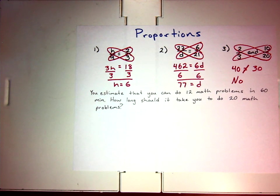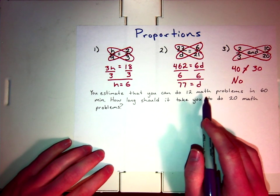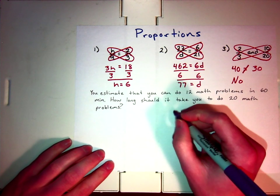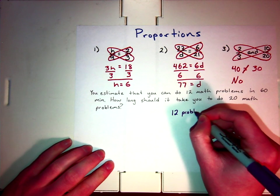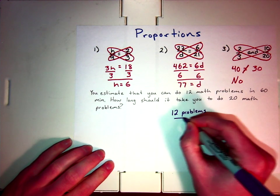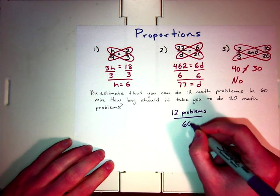For a word problem, you might see something like this. You estimate that you can do 12 math problems in 60 minutes. How long should it take you to do 20 math problems? So, what you need to do is you need to set up a proportion.